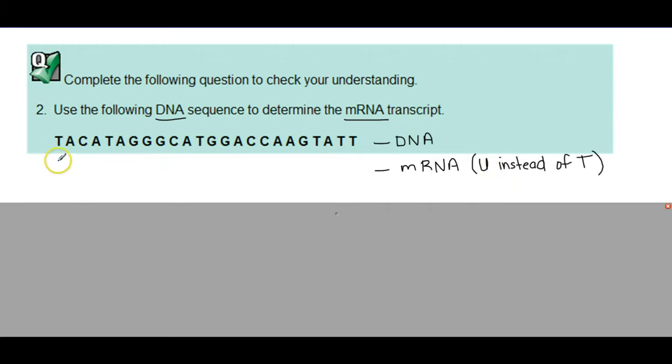If we think about what complements T, it's A. A is complemented with T, but the rule says we can't use T in mRNA, so we put a U. C goes together with G. And you continue this process all the way along until you've finished creating our mRNA. Now is a good chance to hit pause on the video and continue. Copy this DNA into your notes and try it on your own. When you've got what you think is the complete mRNA transcript, press play again and I'll reveal the answer.